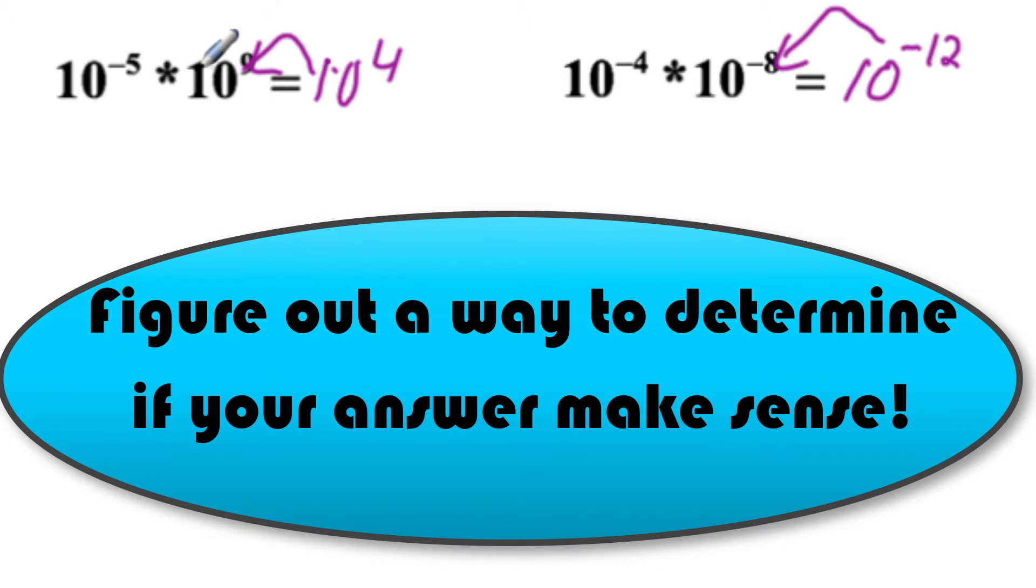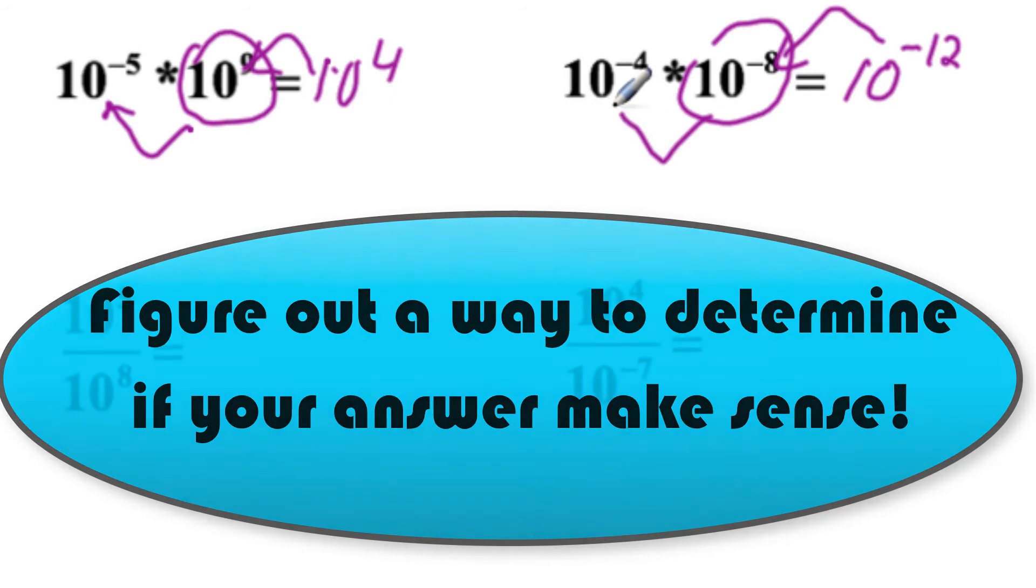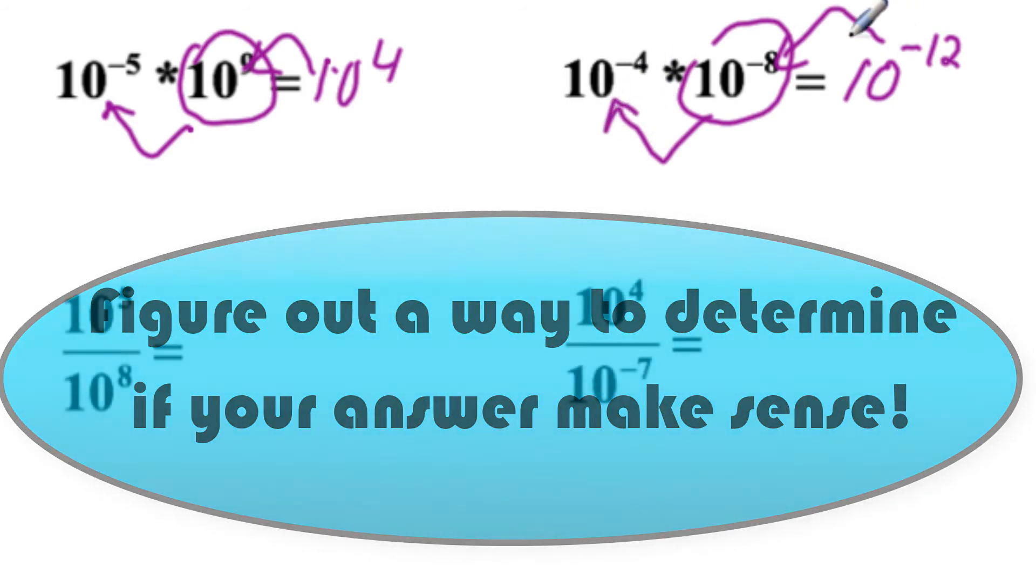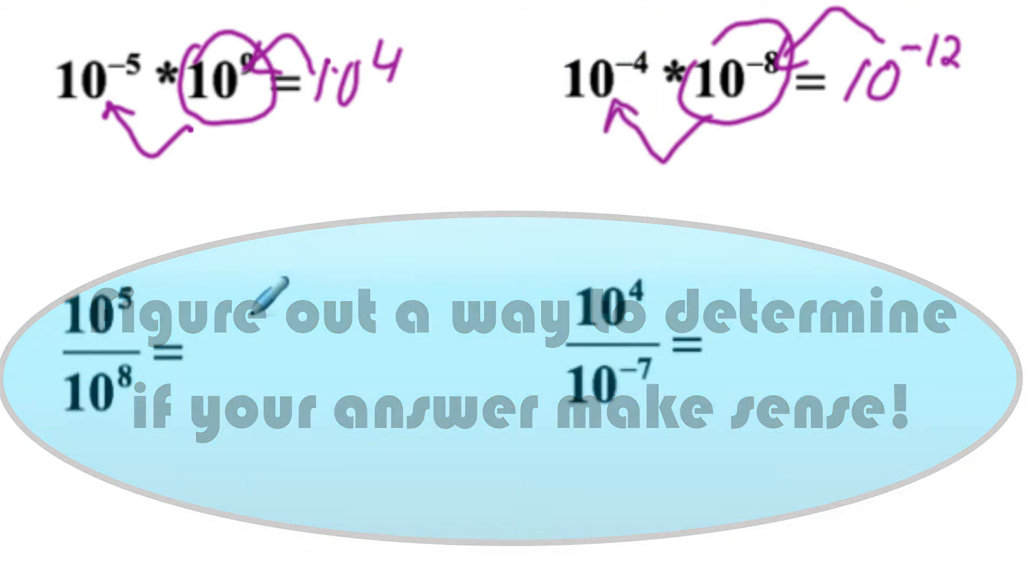It doesn't really matter what order you're thinking of. 10 to the ninth is greater than one, so when you multiply by a number greater than one, you should get your result 10 to the fourth should be something greater than what you're multiplying against here. And similarly, 10 to the minus eighth is less than one, so our result 10 to the minus twelve ought to be smaller than 10 to the minus fourth.